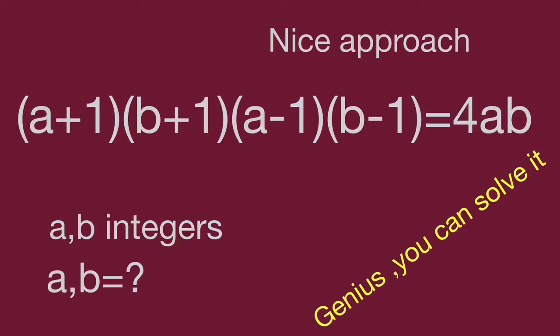Hello, you are watching Biohippo Math Genius Riddles. The question is: the quantity (a+1)(b+1)(a-1)(b-1) equals 4ab, where a and b are integers. Find the value of a and b. We share a nice approach to factorize these items and find the result. Pause the video and try it; when you are ready, keep watching to get the result.